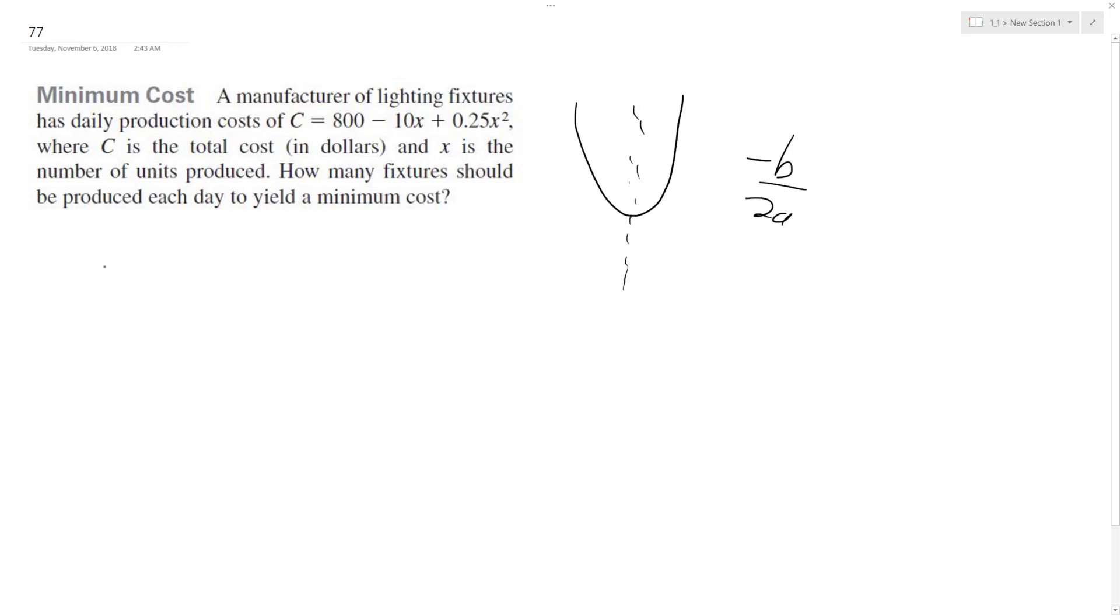And here we have, I'm going to rewrite this as 0.25x squared minus 10x plus 800 equals C. The reason why is because 0.25 is a, negative 10 is b, and 800 is c.